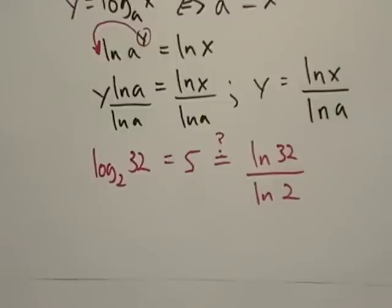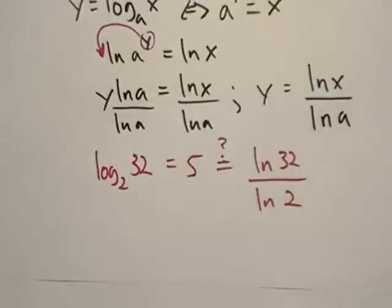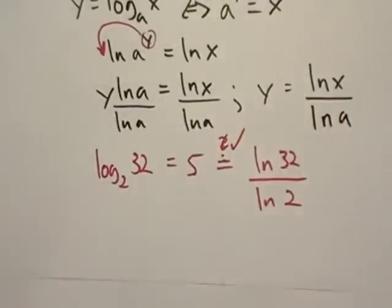So let's go natural log of 32 divided by natural log of two. Shouldn't have been a big surprise that it was going to be five, but hey, you know, it looks like everything checks out.